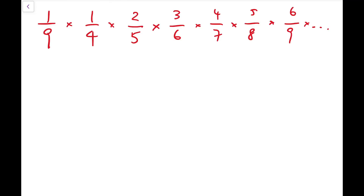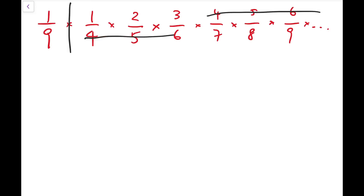This goes on because we are multiplying to infinity. If we set aside the 1 over 9 for the time being, the numerators are consecutive integers starting from 1: 1, 2, 3, 4, 5, 6, 7, 8, 9, and so on. And the denominators are similar but starting from 4: 4, 5, 6, 7, 8, 9. So these things will all cancel out.